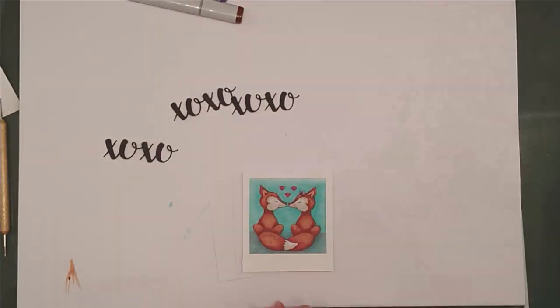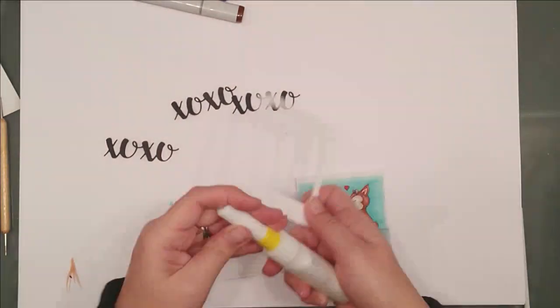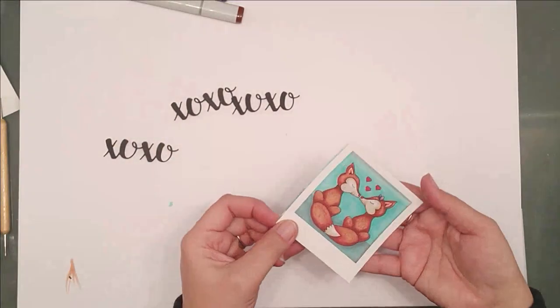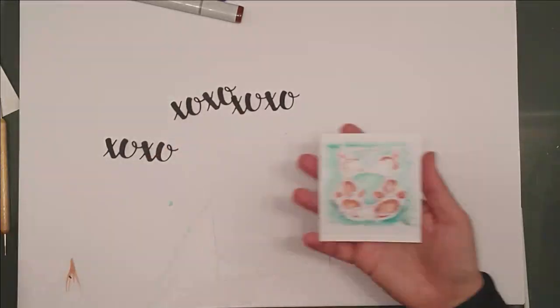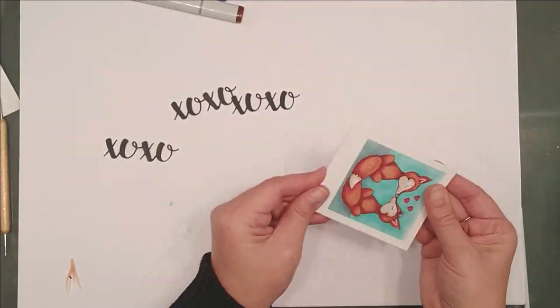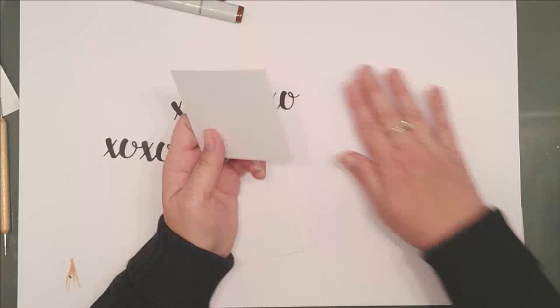Then I'm going to start gluing everything together. I decided on extra layers of cardstock instead of foam for the dimension because I really like the stiffness. To me, it seems more like a Polaroid. But you can go either way.